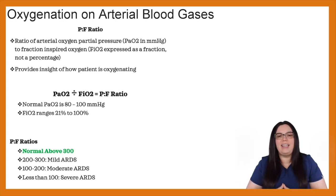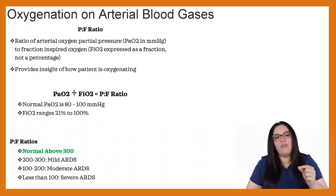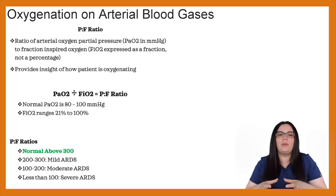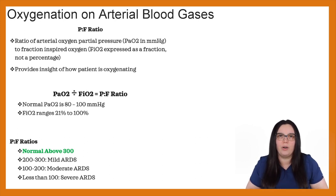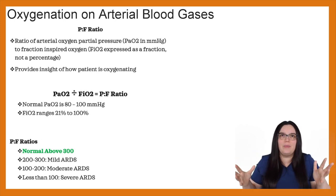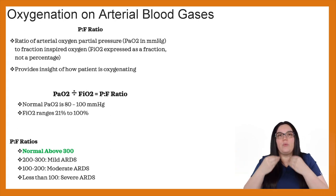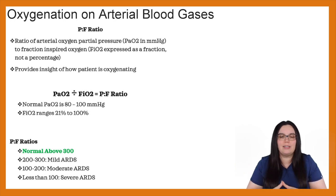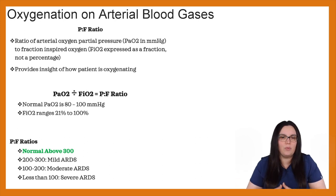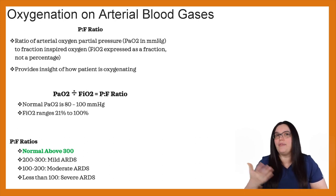Our normal PaO2 is between 80 to 100 millimeters of mercury, and our normal FiO2 ranges between 21% to 100% — that's how much fraction of inspired oxygen we're providing to our patients. We know that 21% is what we breathe in the atmosphere. FiO2 becomes a decimal when we're looking at it on the ABG. A normal PF ratio needs to be above 300.